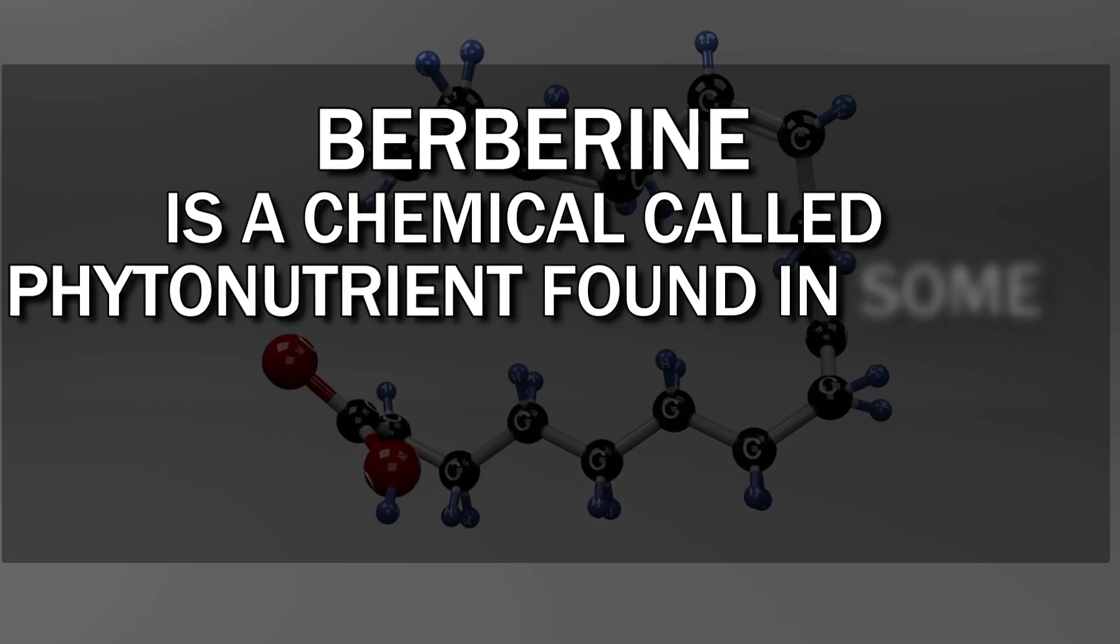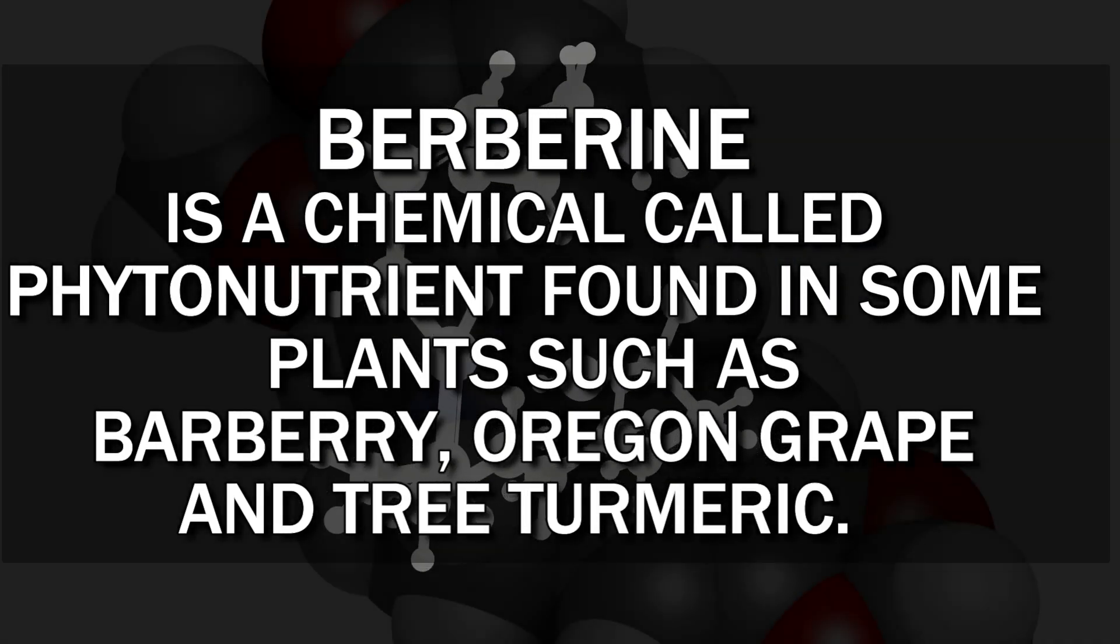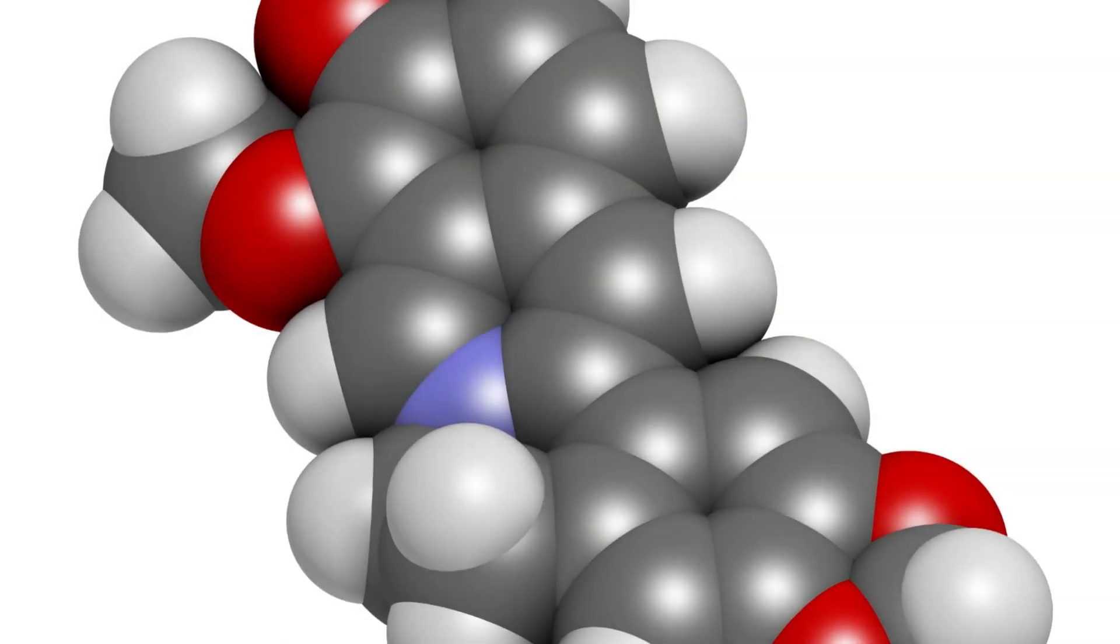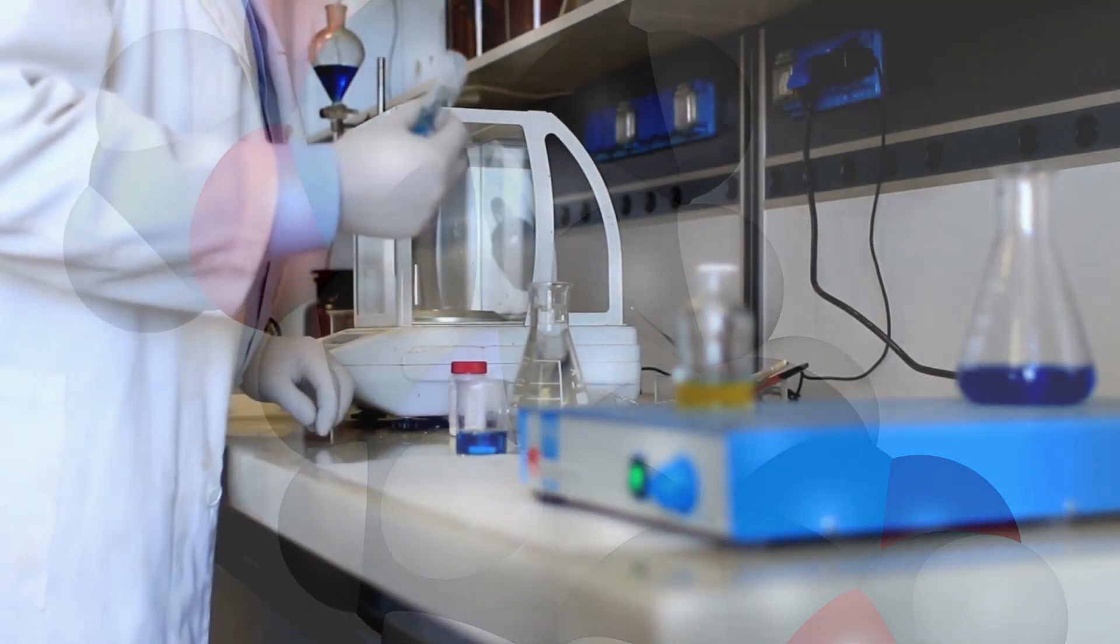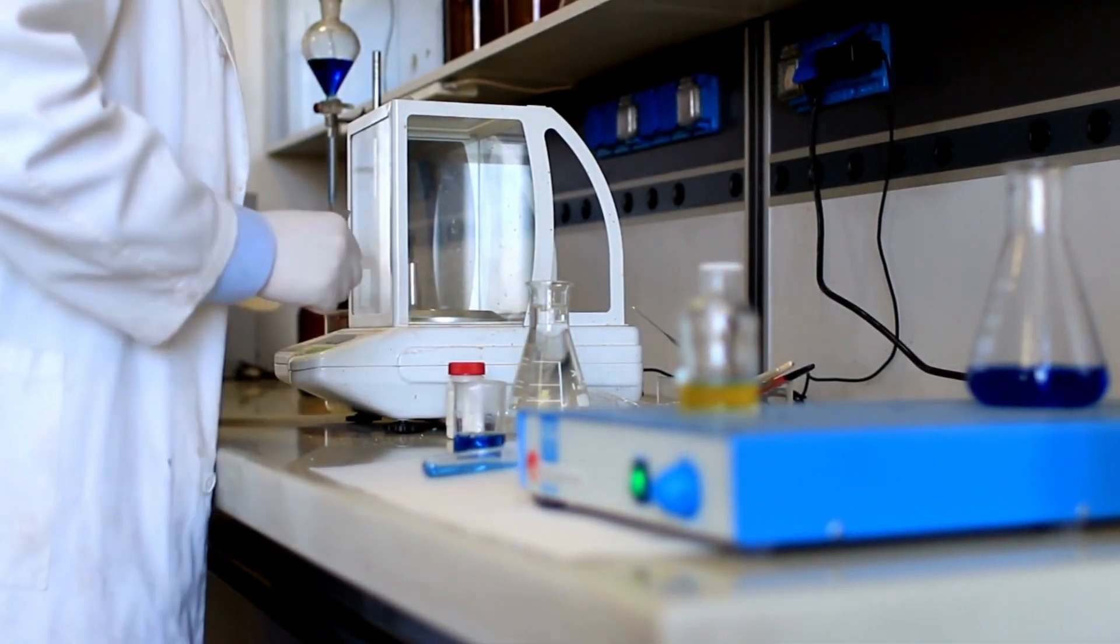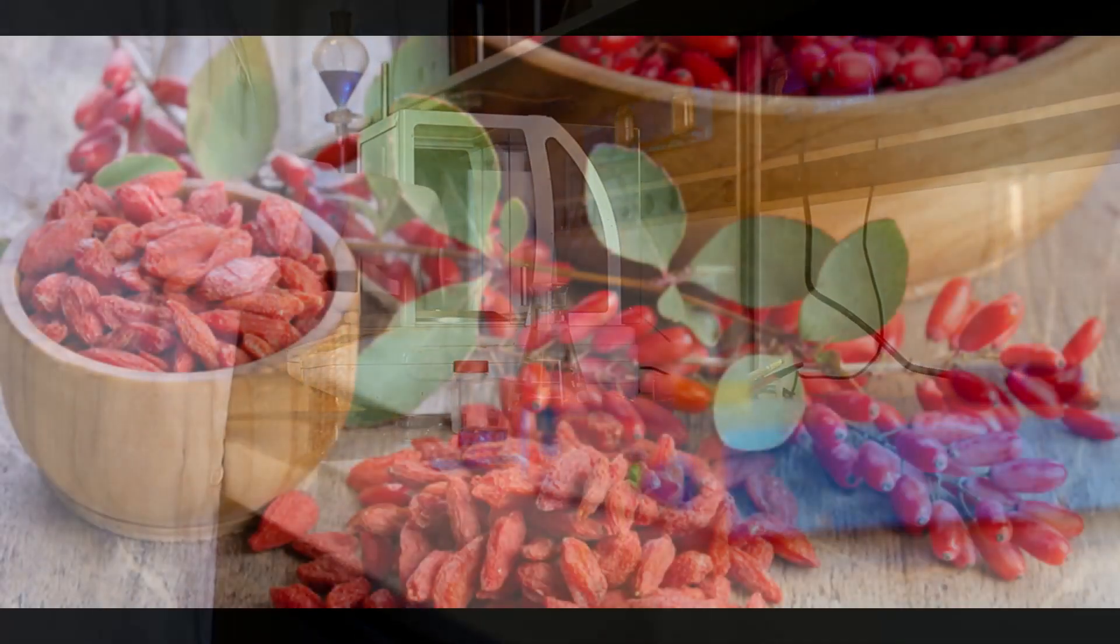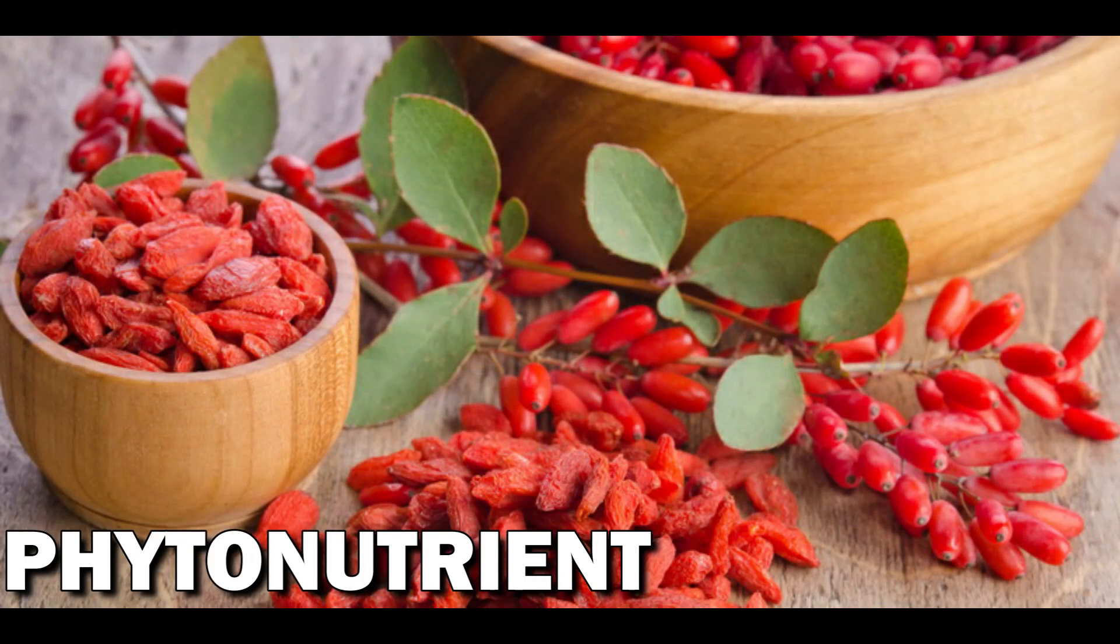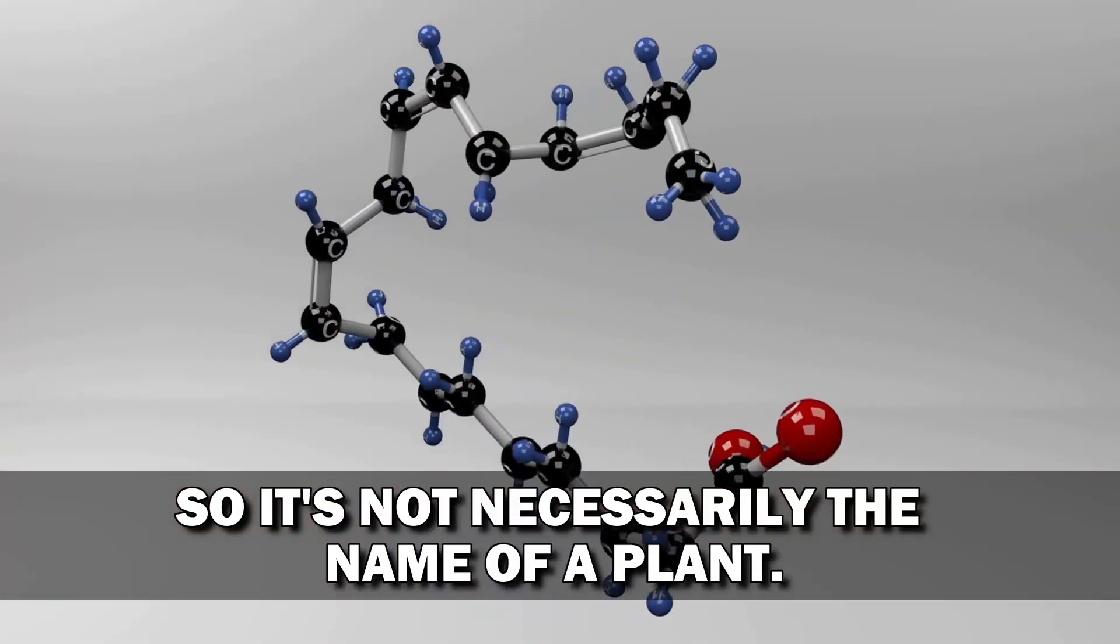Berberine is a chemical called phytonutrient found in some plants such as barbary, oregon grape and tree turmeric. It is an incredible compound that is being touted as the new turmeric in terms of health benefits. Berberine has been thoroughly studied and a lot of people know about it, but what they don't really know are its healing benefits. As we've mentioned earlier, berberine is a phytonutrient in certain plants, so it's not necessarily the name of a plant.